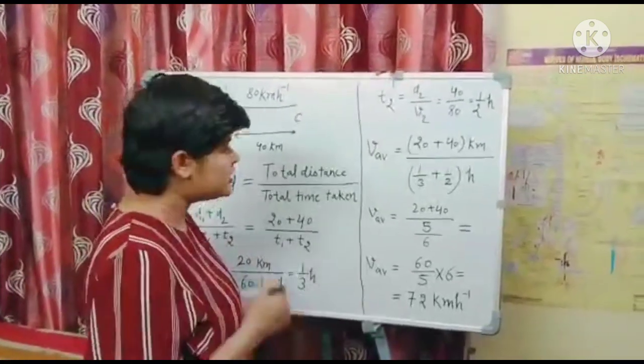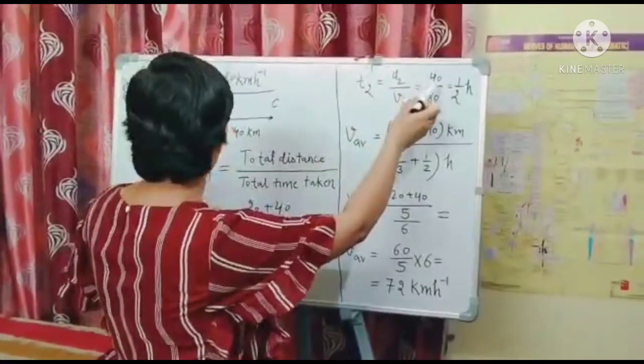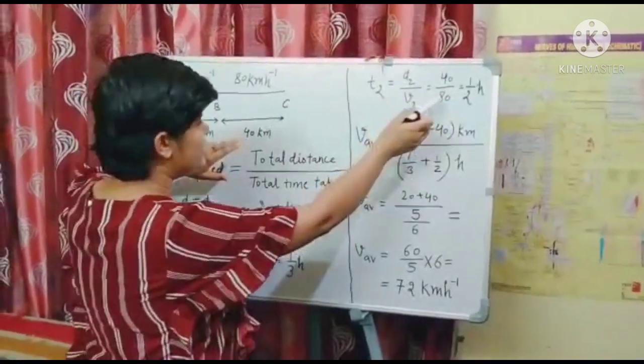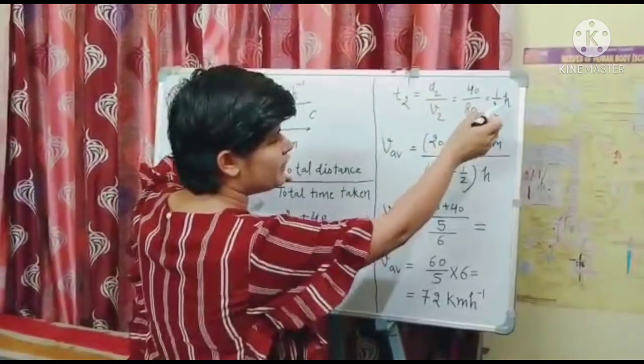Now to calculate T2, T2 is D2 by V2. Same, so D2 is given as 40 and V2 is given as 80 km per hour. So 40 by 80 will be 1 by 2 hour.